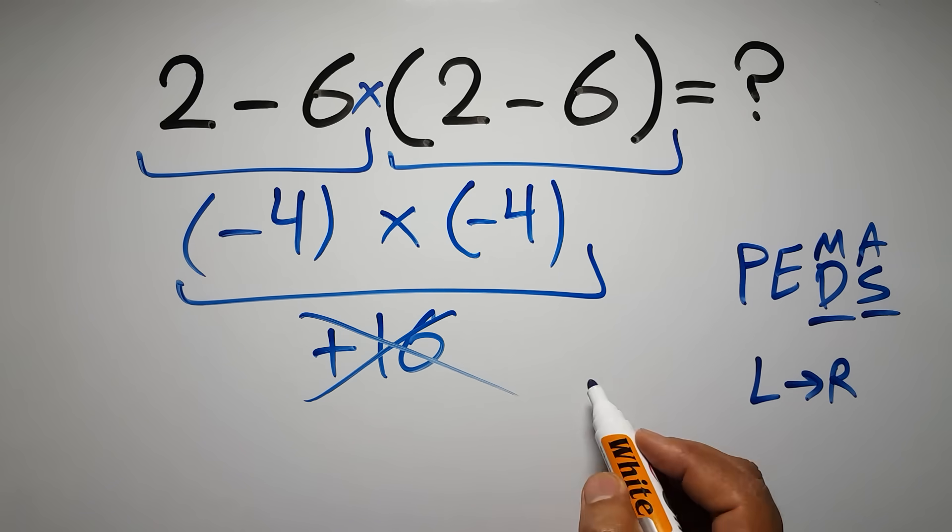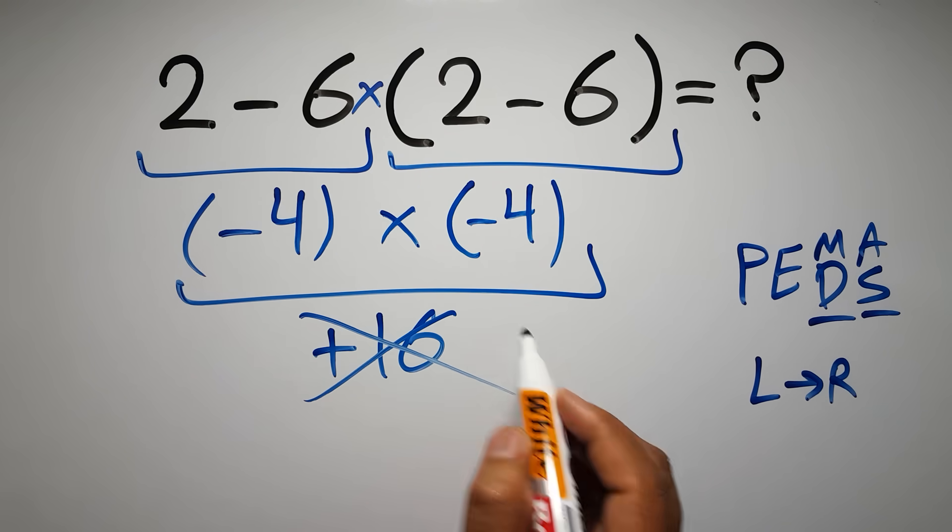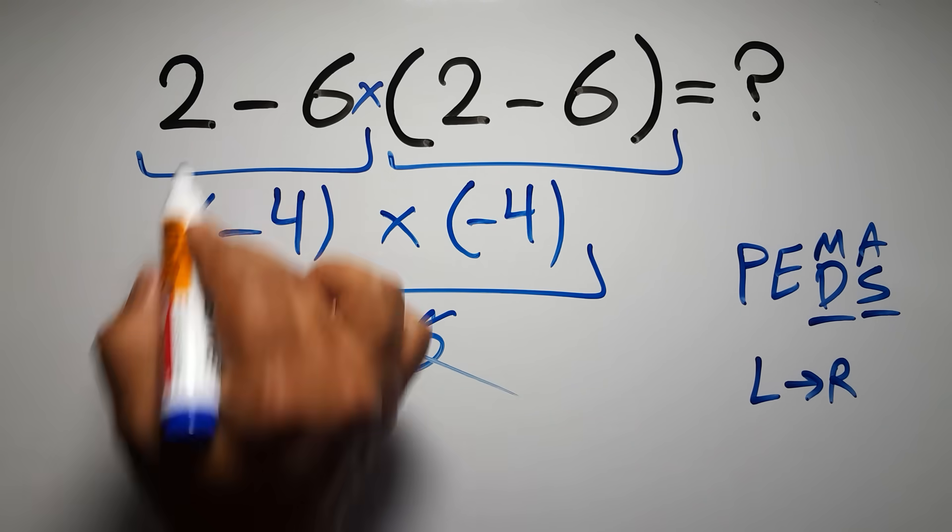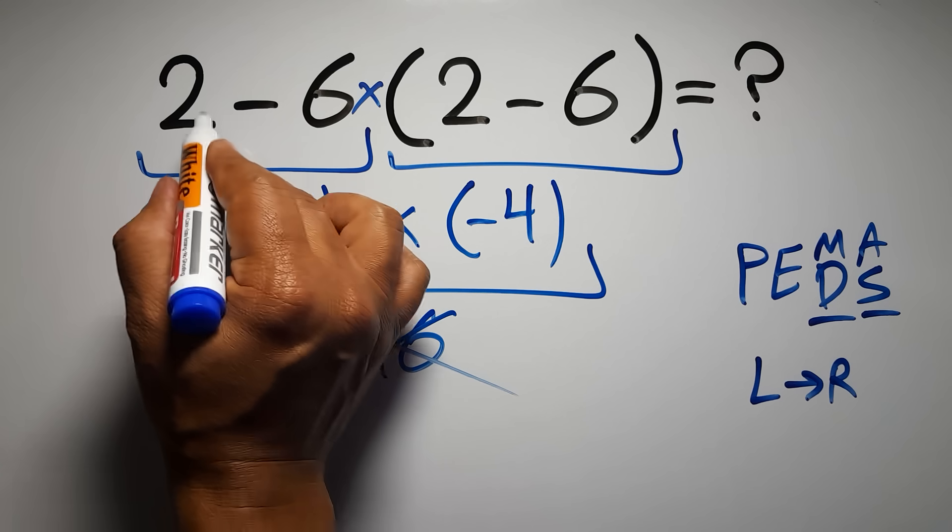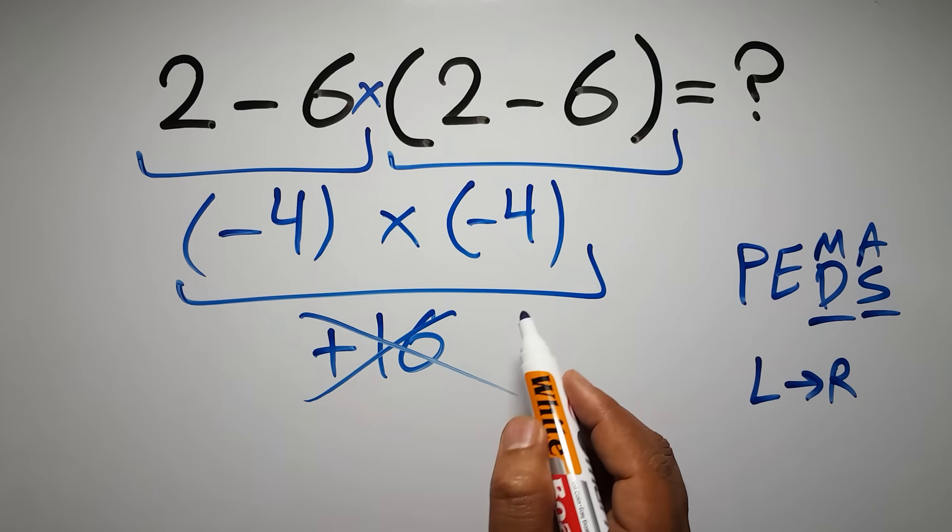Now according to the PEMDAS, first we have to do this parentheses, then this multiplication, then this multiplication, and finally this subtraction. If we do this subtraction before this multiplication, or this parentheses, it is wrong.